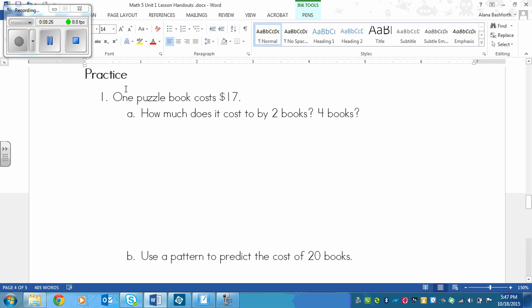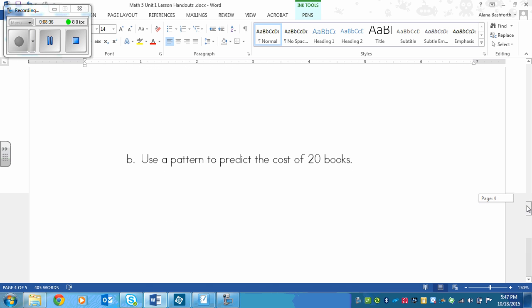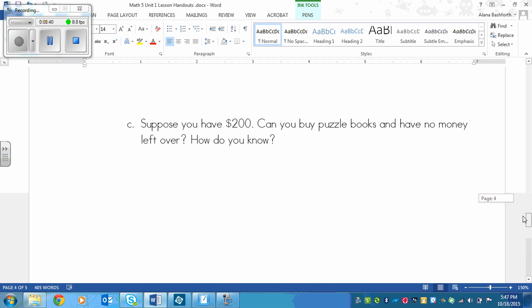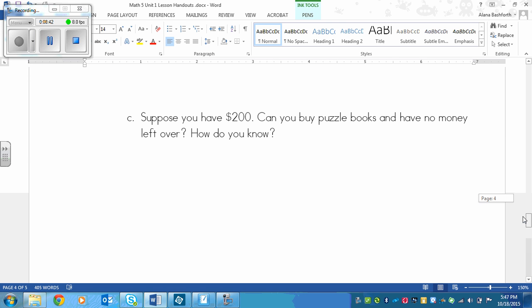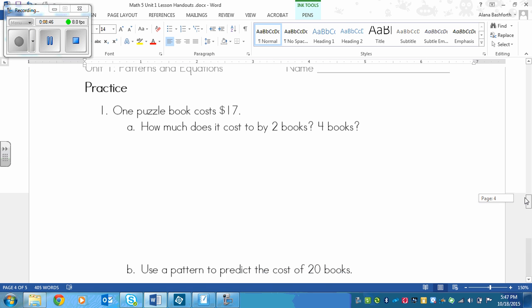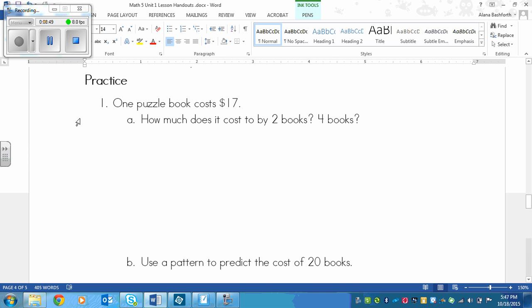This one says one puzzle book costs $17. How much does it cost to buy 2 books, 4 books? B says use a pattern to predict the cost of 20 books. And C, suppose you have $200. Can you buy puzzle books that have no money left over? How do you know? Okay, so use a table like we did above. And play the video again once you've finished all three of those questions.